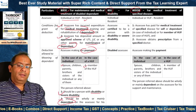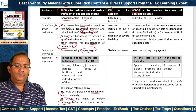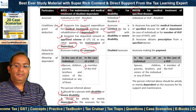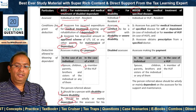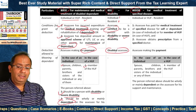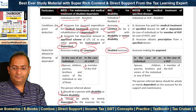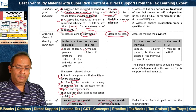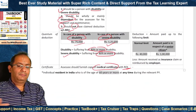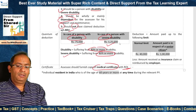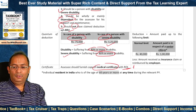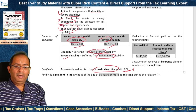Section 80U is available to a resident individual who is certified to be a person with disability or severe disability — the deduction is allowed to the disabled assessee himself, not to any other person. The amount of deduction is the same flat Rs 75,000 or Rs 1,25,000 as under 80DD, and the condition of furnishing a medical certificate also applies.